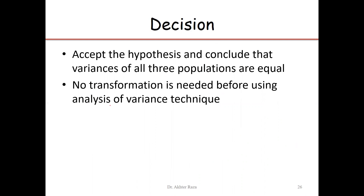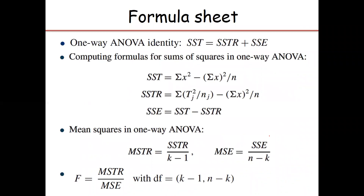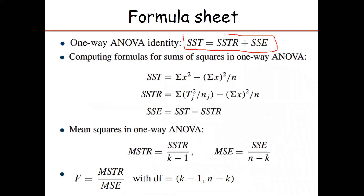Now we are going to test the hypothesis of equality of means — the average number of defects in type A, type B, and so on — with the alternate hypothesis that at least two brands are not the same in respect of the number of defects. The partitioning statement says that the sum of squares total (SST) equals the sum of squares treatment (SSTR) plus the sum of squares error (SSE).